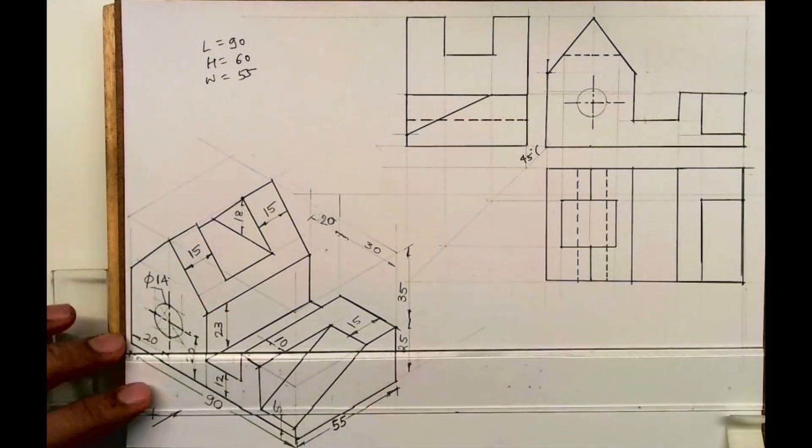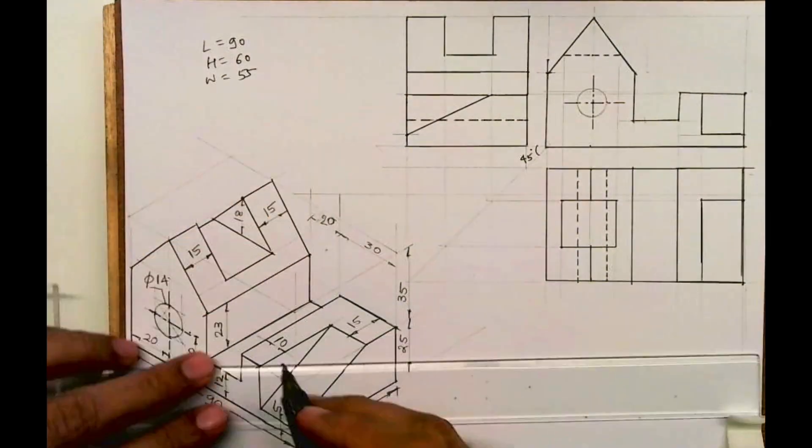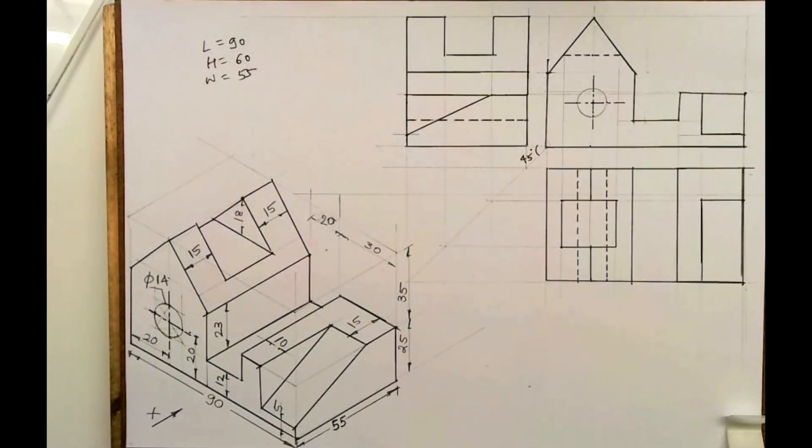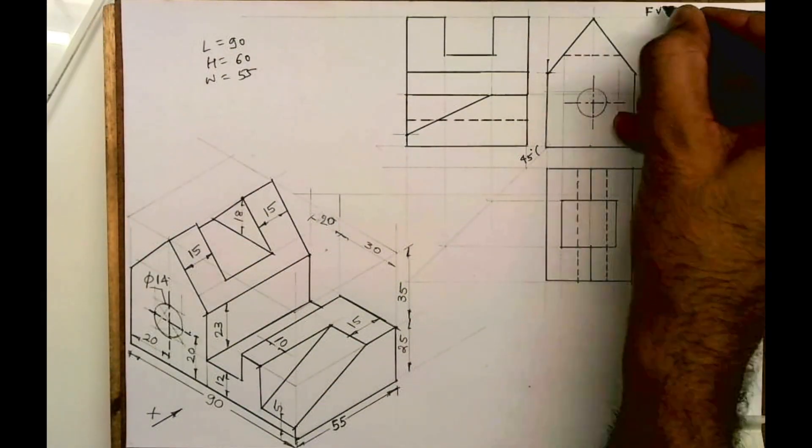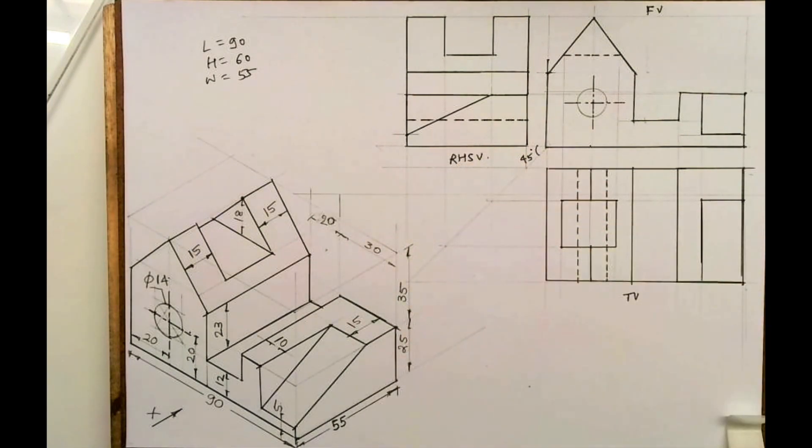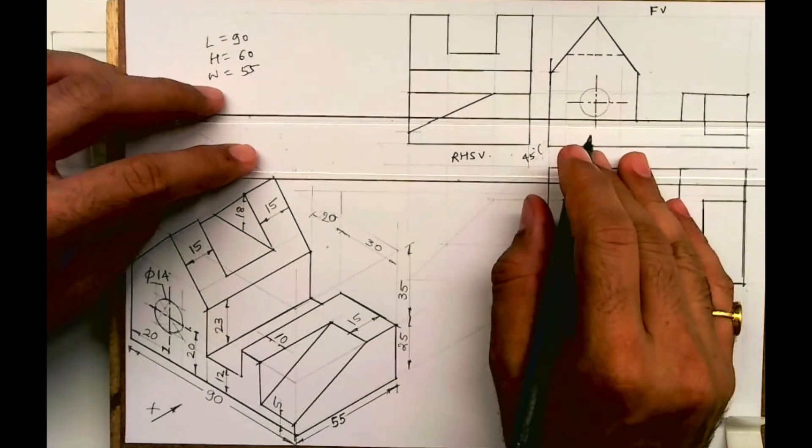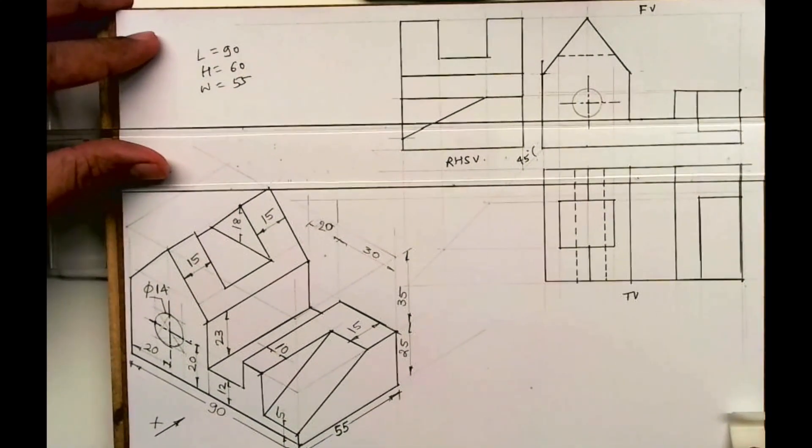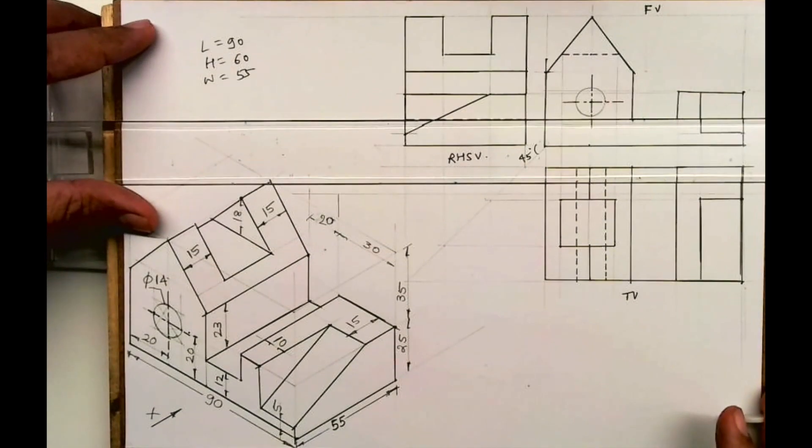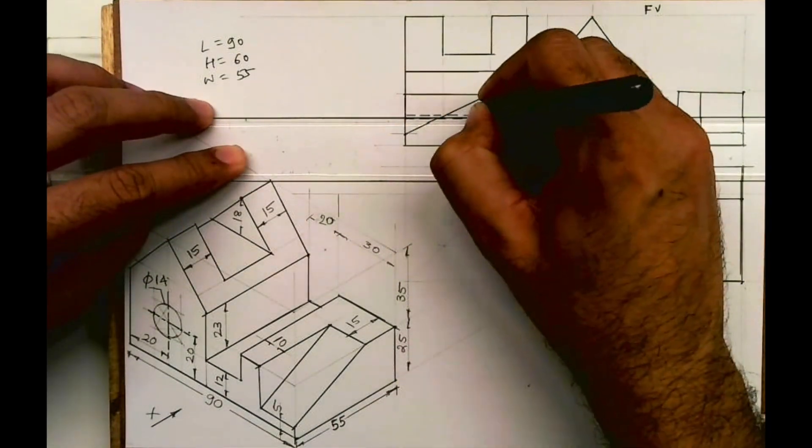Now the circle. We need to draw dotted lines for the circle. This line is dark. This is front view, top view, right-hand side view. We need to draw dotted lines for the circle. This is dotted.